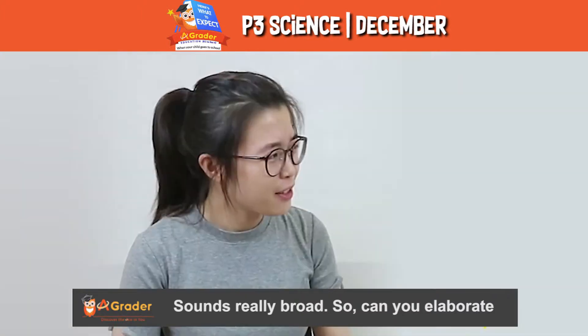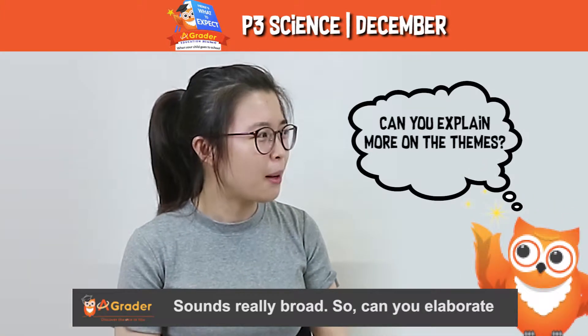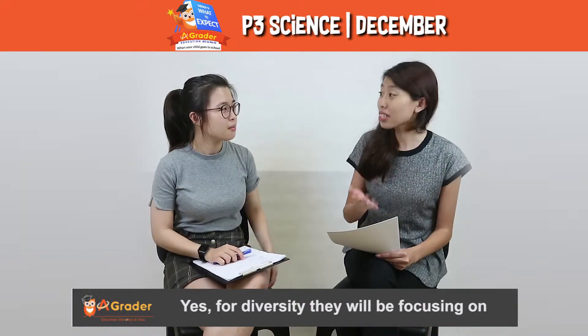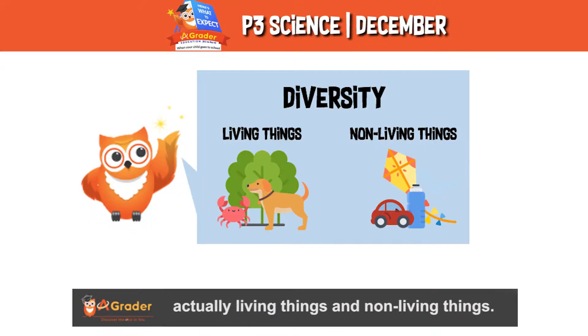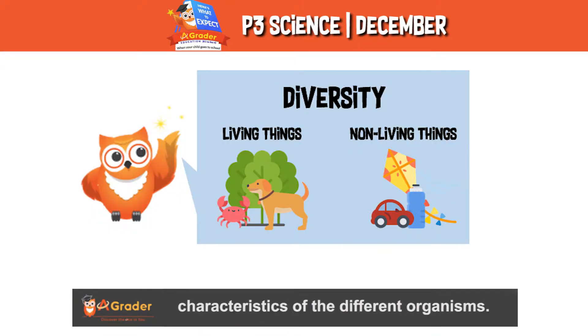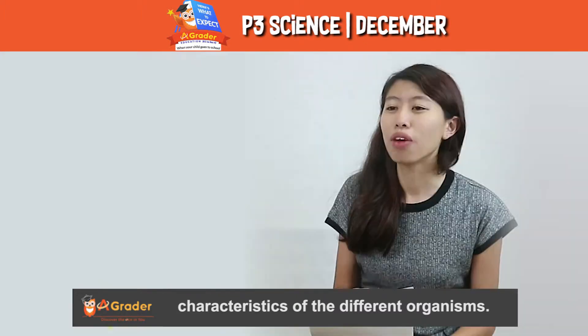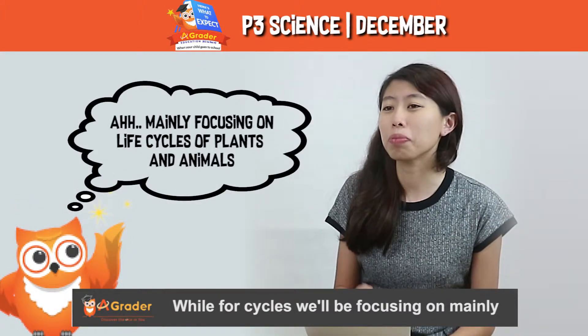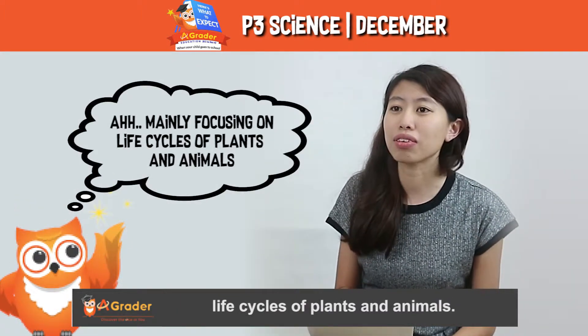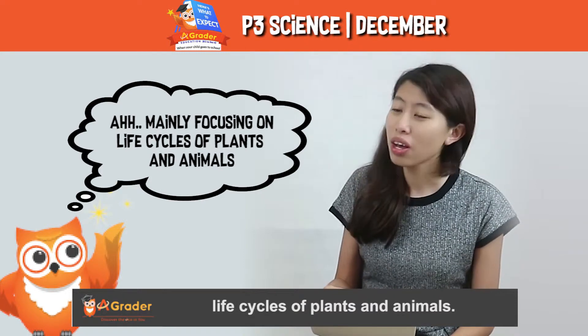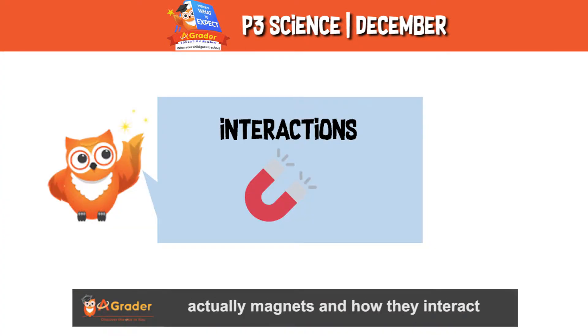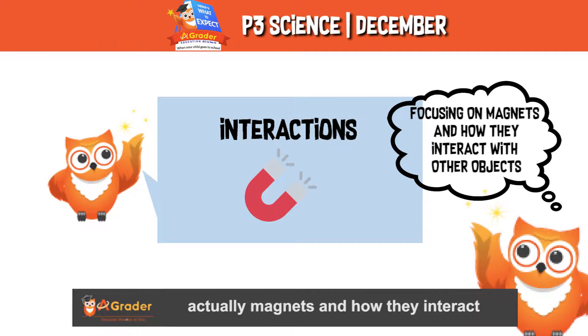Sounds really broad, so can you elaborate more about the themes you mentioned? For diversity, they will be focusing on living things and non-living things, and they have to know the characteristics of the different organisms. For cycles, they will be focusing mainly on life cycles of plants and animals. While for interactions, they will be focusing on mechanics and how they interact with different objects.